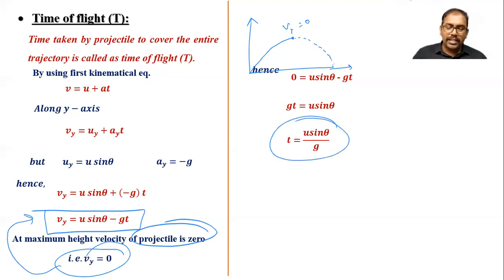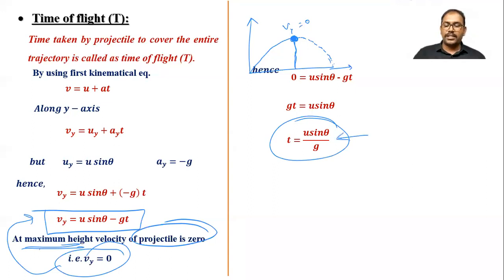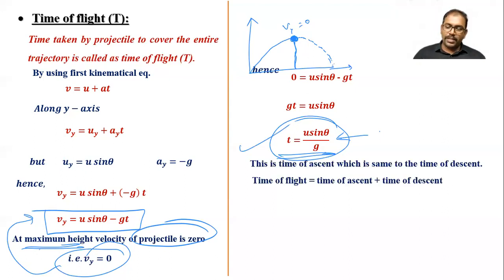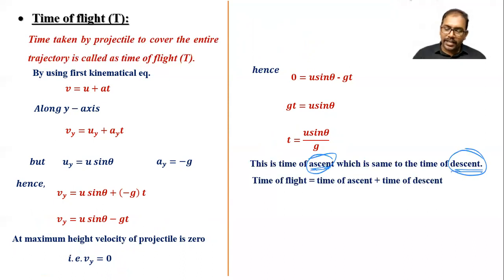Rearranging, g·t = u sinθ, so t = u sinθ / g. This t is the time taken by the projectile to reach maximum height, which is the time of ascent. By symmetry, the same time is taken to come down, which is the time of descent.